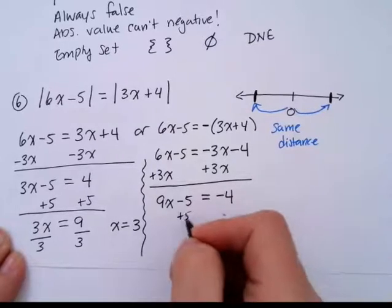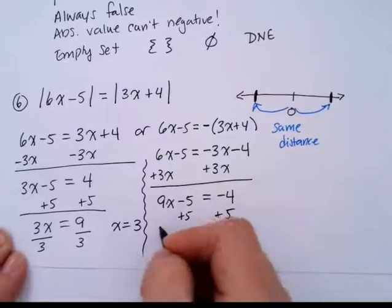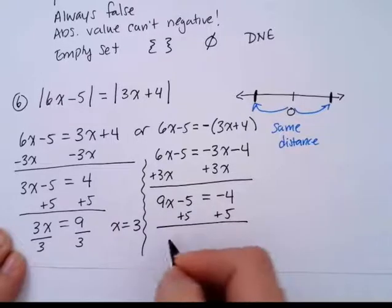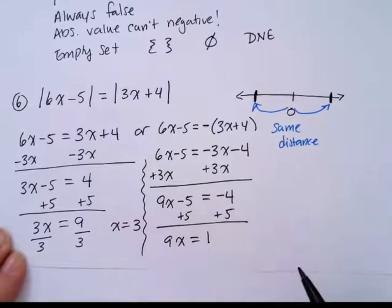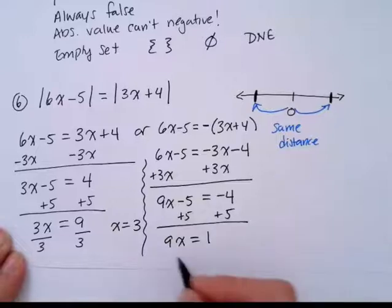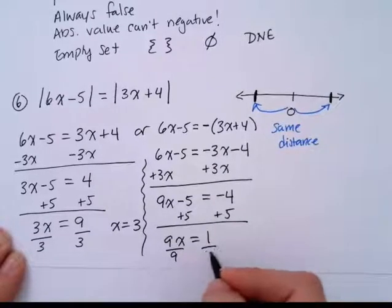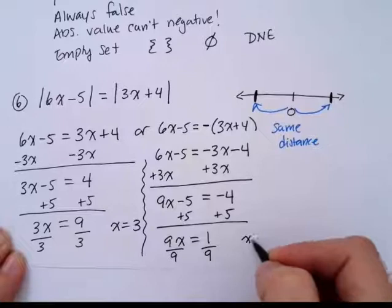So then I'll get the constant on the right hand side. 9x equals 1. Divide both sides by 9. And I have x equals 1 ninth.